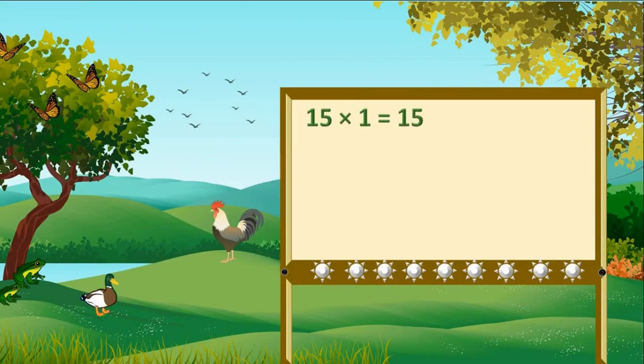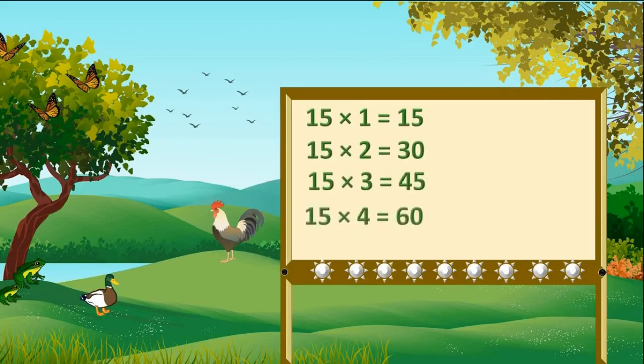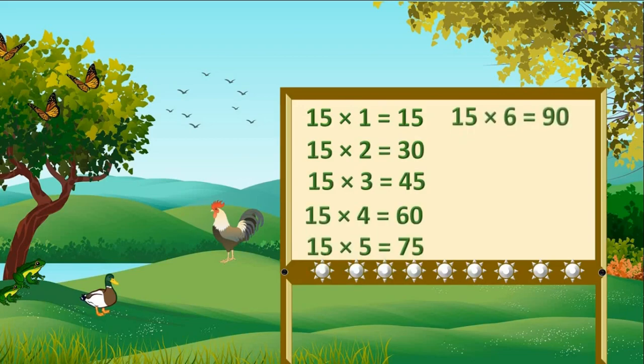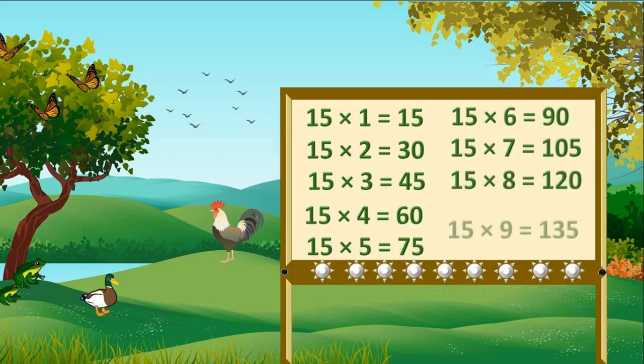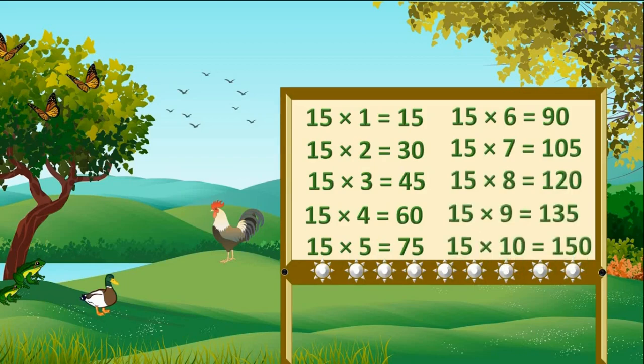Learn table of 15. 15×1 is 15, 15×2 is 30, 15×3 is 45, 15×4 is 60, 15×5 is 75, 15×6 is 90, 15×7 is 105, 15×8 is 120, 15×9 is 135, 15×10 is 150.